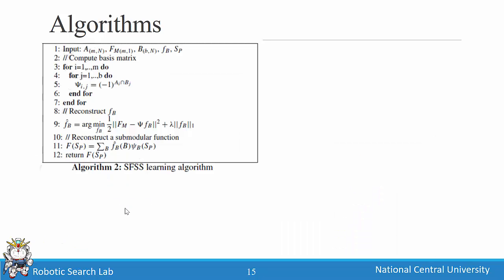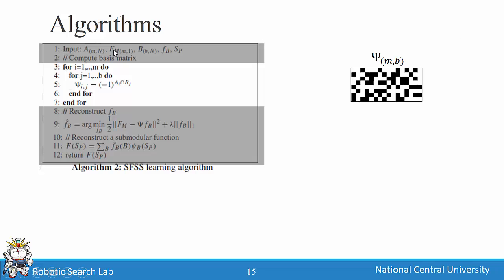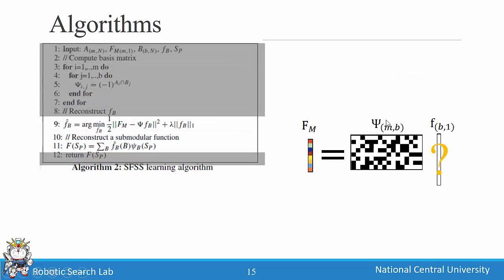Once we have the basis, we collect coverage data with its corresponding set and compute the sensing matrix. Using sparse regression, we compute the Fourier coefficients. Given any new set, we compute its corresponding sensing row and use it to predict the coverage data. This full algorithm is called the KSFSS algorithm.